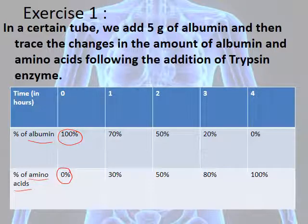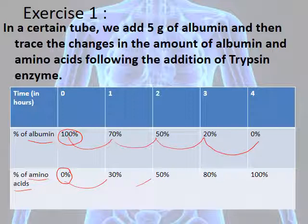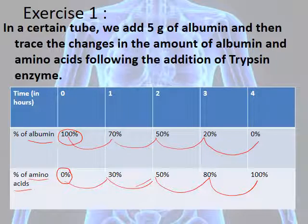As time increases, the percentage of albumin decreases from 100 to 70, then from 70 to 50, to 20, to 0. This means that as time increases, the percentage of albumin decreases. The percentage of amino acids at time 0 was 0%, and as time increases from 0 to 4 hours, the percentage of amino acids increases to 30, to 50, to 80, and then to 100.